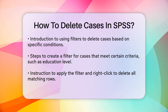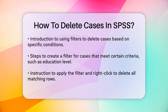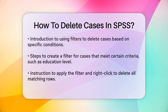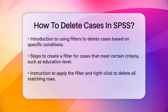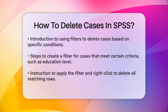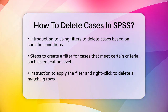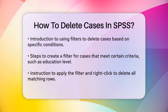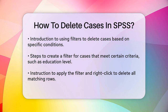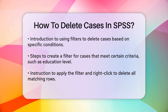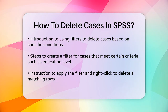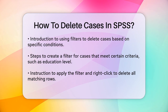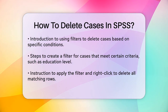To do this, go to the data view and create a new filter based on your criteria. For instance, if you have a variable indicating education level, you can filter out those who did not complete tertiary education. Once the filter is applied, right-click on any row within the filtered data and select Clear to delete all the rows matching the filter.